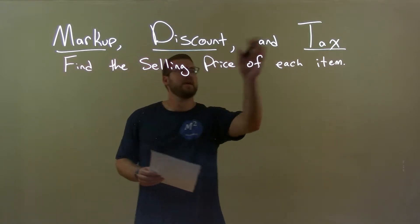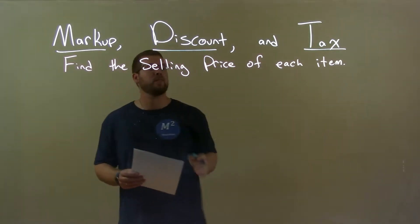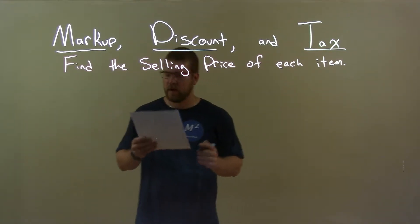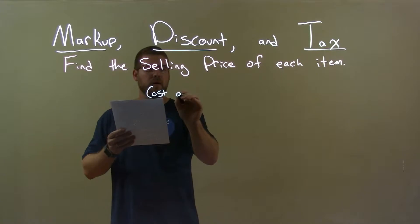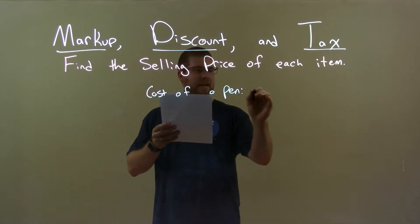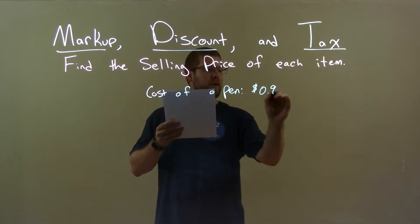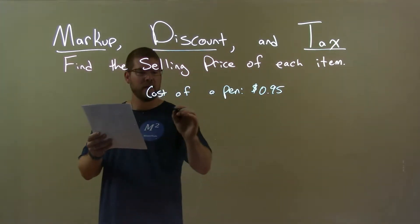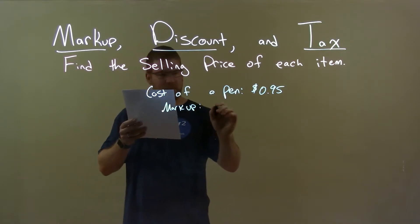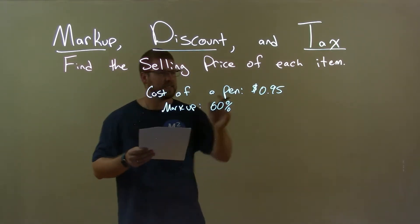Today we're learning about markup, discount, and tax. We're going to find the selling price of each item. So, if I was given this item, the cost of a pen is 95 cents. Its markup is 60%.